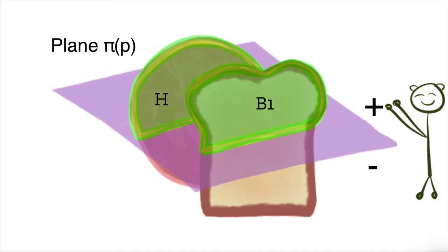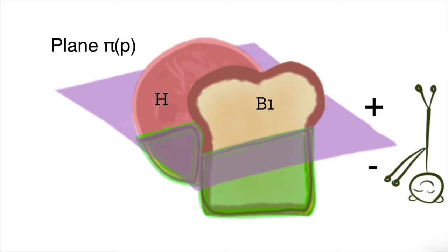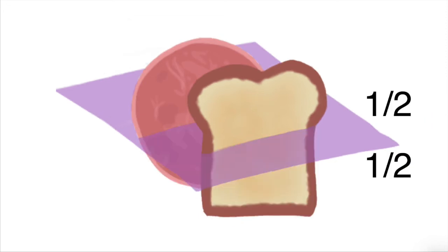the volumes of B1 and H that are on the positive side of plane π(P) is equal to the volume of B1 and H on the positive side of plane π of negative P, which is the negative side of plane π(P). This tells us that plane π(P) bisects B1 and H.